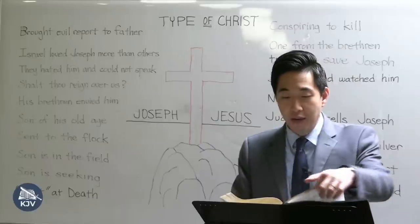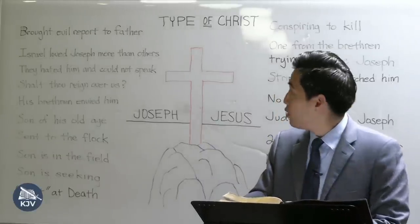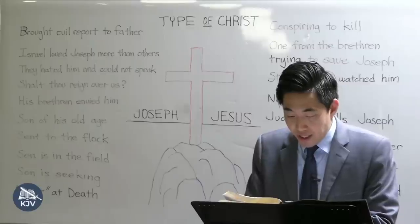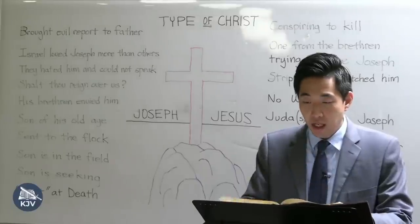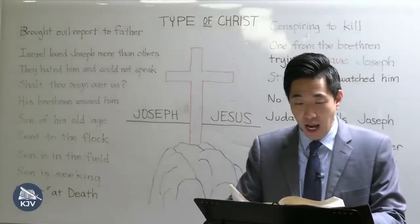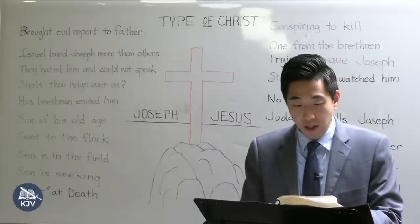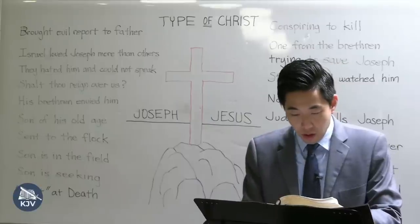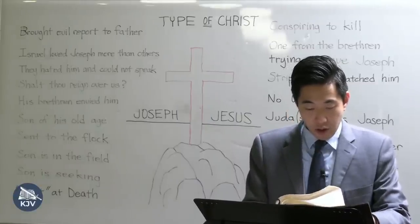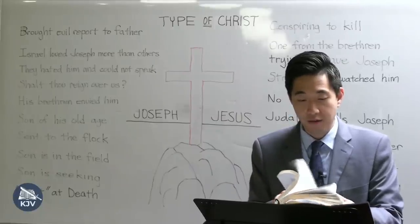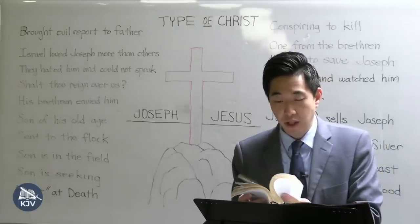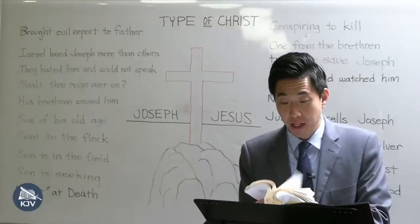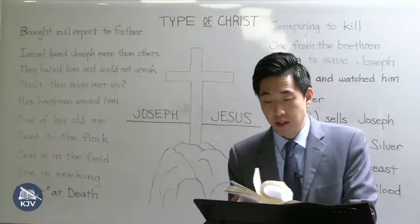Looking at Genesis 37 again, verse 3 says he was the son of his old age. One thing we know about God — go to Revelation 1 and Micah 5 — Jesus Christ is the son of God who is very old in age. He is from eternity. Revelation 1:8 says, 'I am Alpha and Omega, the beginning and the ending, saith the Lord.' And Micah 5:2 says his 'going forth have been from of old, from everlasting.' Another similarity right there.